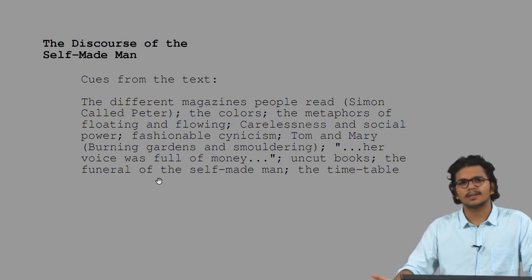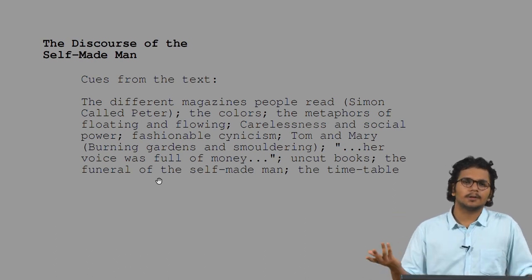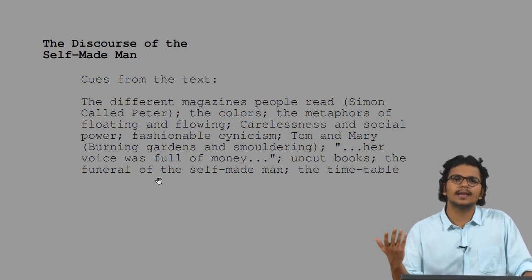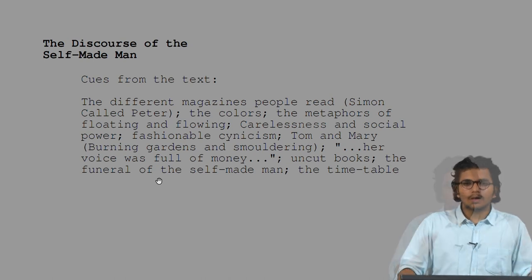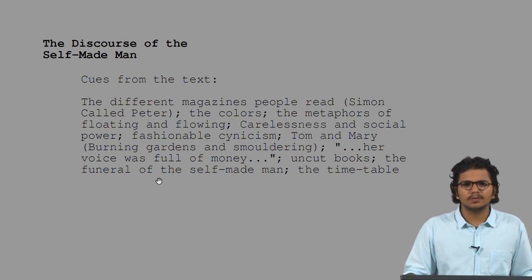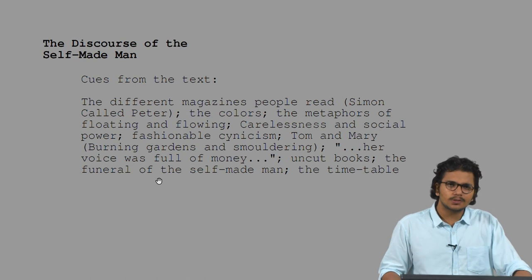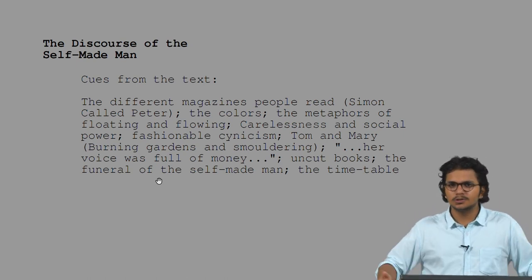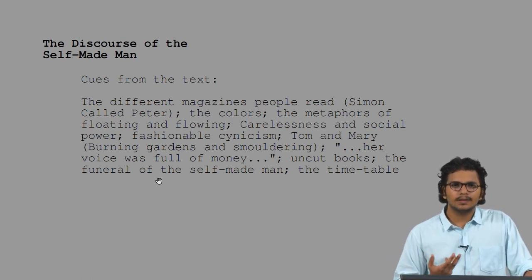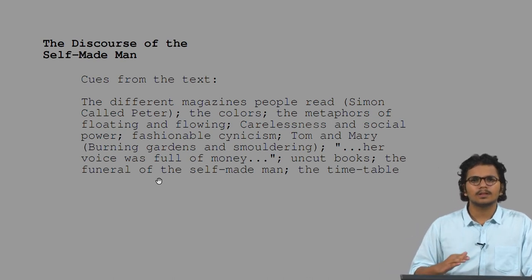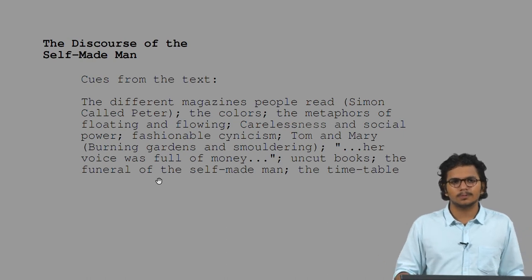Cynicism is also very fashionable. Jordan Baker is a very cynical person — she lies a lot and her approach to the world is very disinterested. This is also one of those cultural and moral characteristics of the 1920s. We also have Tom and Myrtle described in various metaphors of burning and smoldering, as if the vitality of life was coming from within themselves. This is ironical because Tom, while a huge man of much physical strength, is also careless in the sense that the fire in him is not as strong as the fire in Myrtle, who is a very ordinary woman although she aspires to become one of those rich women.